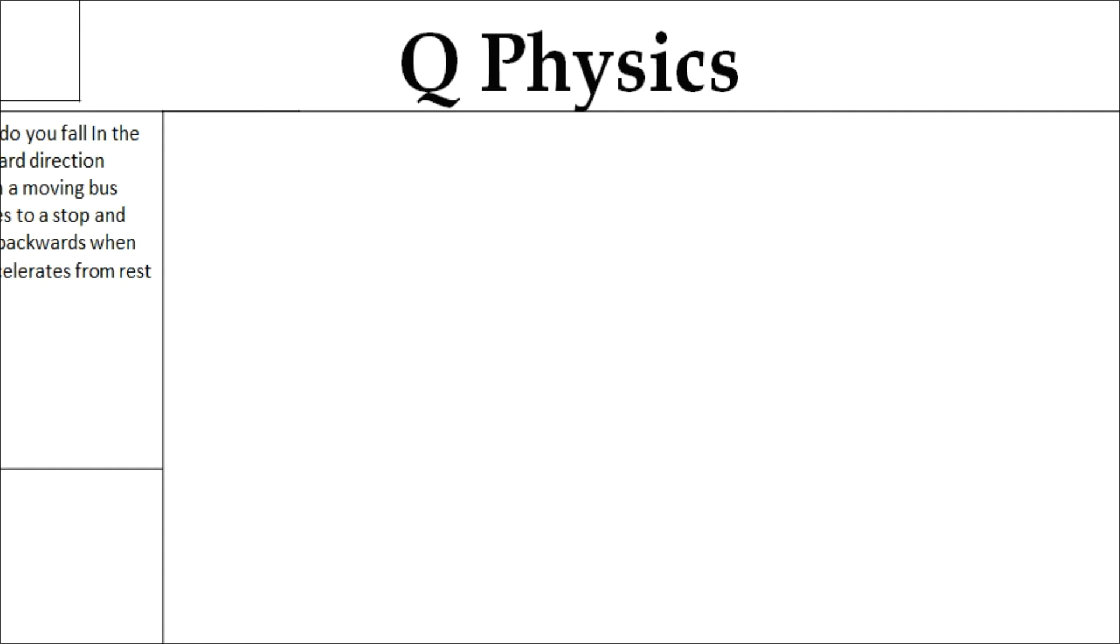Why do you fall in the forward direction when a moving bus brakes to a stop and fall backward when it accelerates from rest?